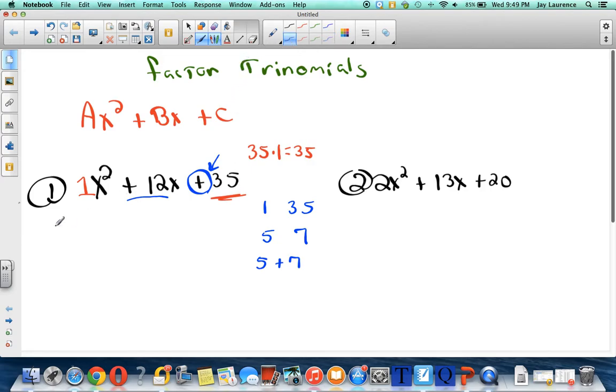Now watch this. I'm going to rewrite this trinomial. I'm going to put x² here. I don't need to put the 1 there, I can if I want to. And instead of writing 12x, I'm going to write positive 5x plus 7x. Would you agree that this here is 12? It's almost like I'm unsimplifying. I'm un-combining like terms. Plus 35.